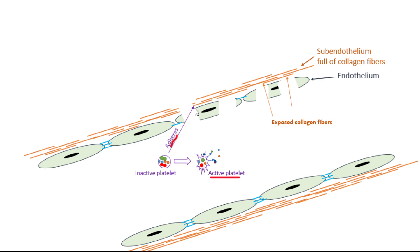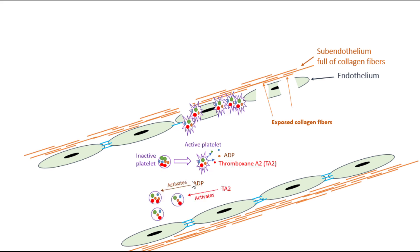Now we focus on some of the chemicals that platelets release. For this video we focus on two of them: adenosine diphosphate (ADP) and thromboxane A2. Both of these chemicals are important because they are involved in activating other platelets. So from already activated platelets, ADP and thromboxane A2 are released and then participate in activating additional platelets.